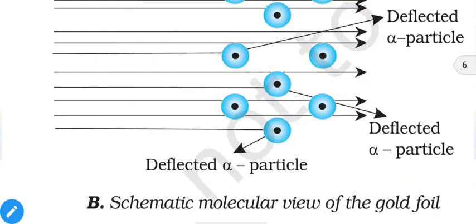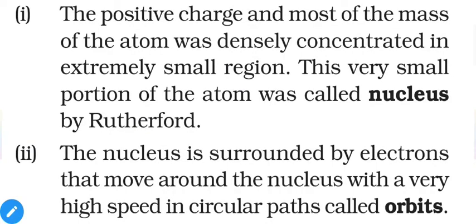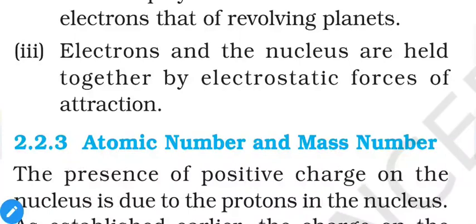To appreciate this difference: if the atom were the size of a cricket ball, the radius of the nucleus would correspond to about five kilometers. Based on these conclusions, Rutherford proposed that the positive charge and most of the mass of the atom are densely concentrated in an extremely small region called the nucleus. The nucleus is surrounded by electrons that move around it at very high speed in circular paths called orbits. Rutherford's model resembles the solar system, with the nucleus playing the role of the sun and electrons as revolving planets. Electrons and the nucleus are held together by electrostatic force of attraction.